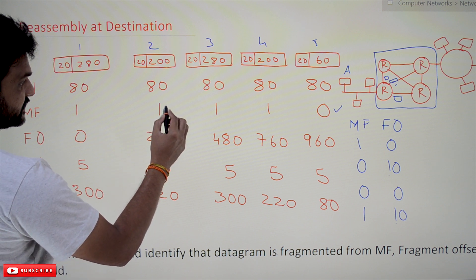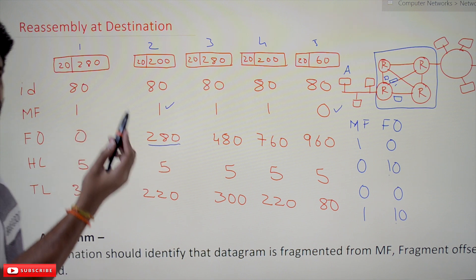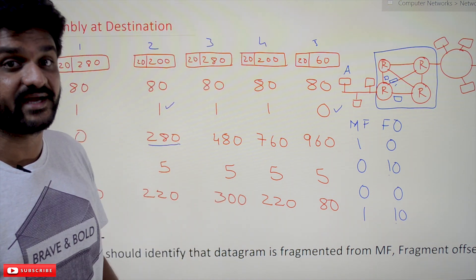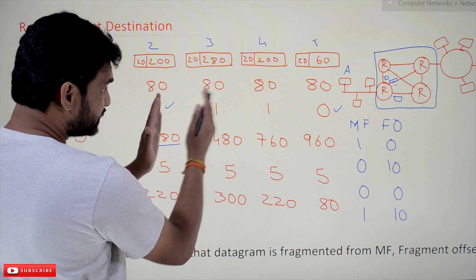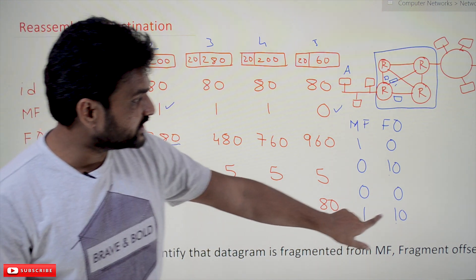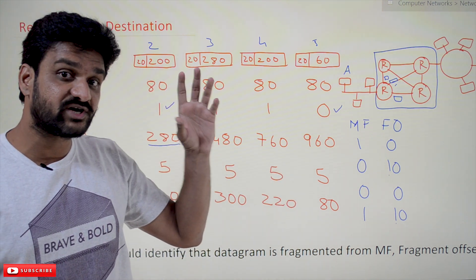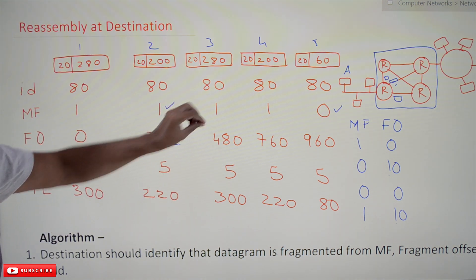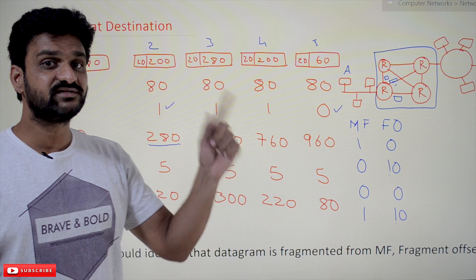If MF is equal to 1 and the offset is not equal to zero — any number other than zero — it means that this packet is an intermediary packet, between the first and the last packet. So there are different logics hidden within these two fields. By using these two fields, plus header length and total length, we can reassemble everything in an easy way.